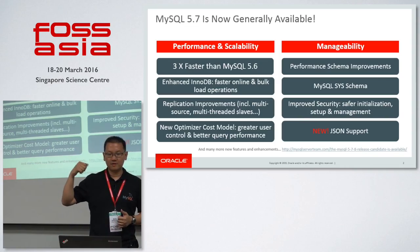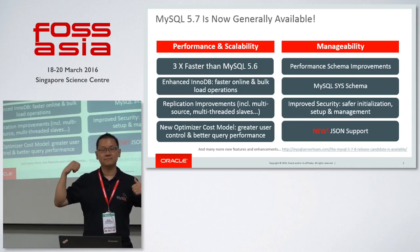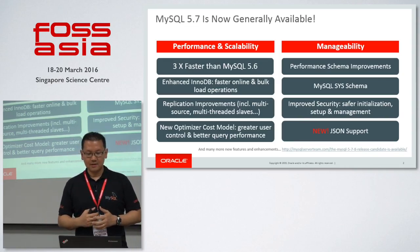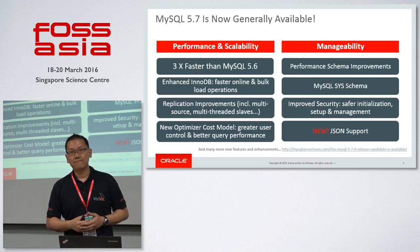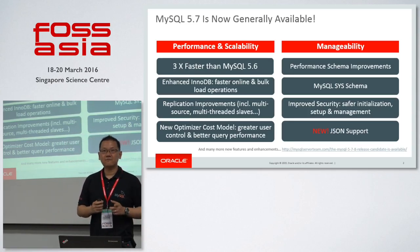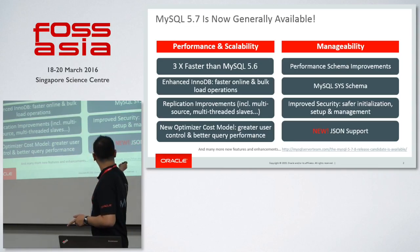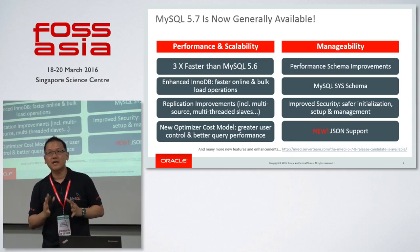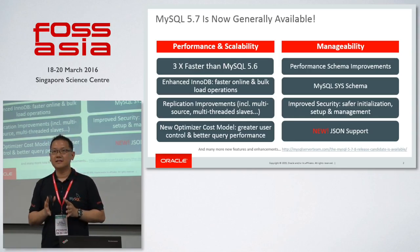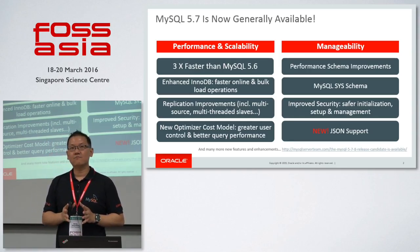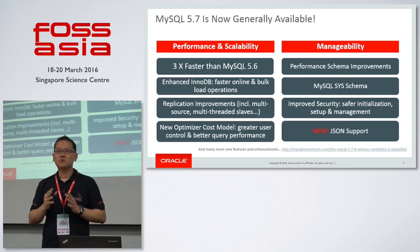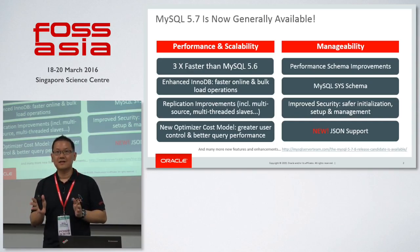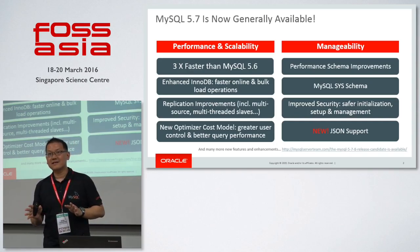We'll talk more about InnoDB and replication optimizer cost later. The big thing in 5.7 is JSON support — we started to support the native JSON data type. Last time, people used to store JSON in a text data type. Now they no longer need to do that.